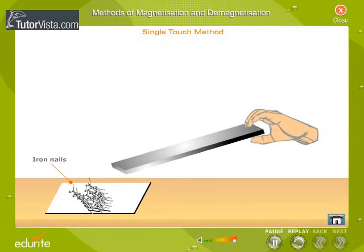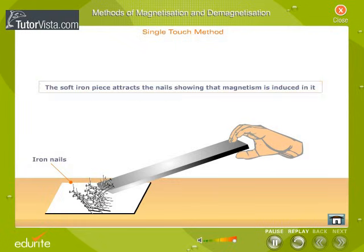Now bring the soft iron piece near the iron nails. The soft iron piece attracts the nails showing that magnetism is induced in it.